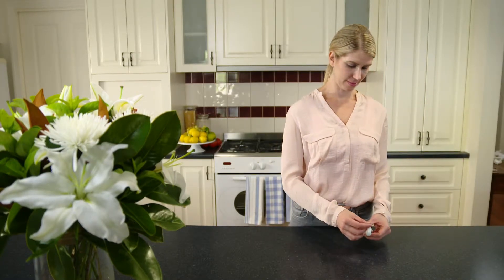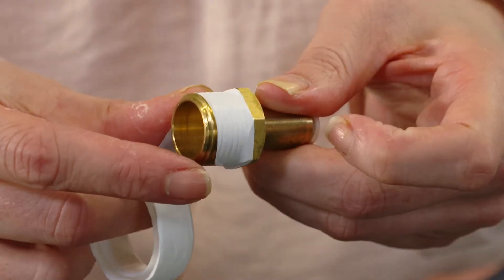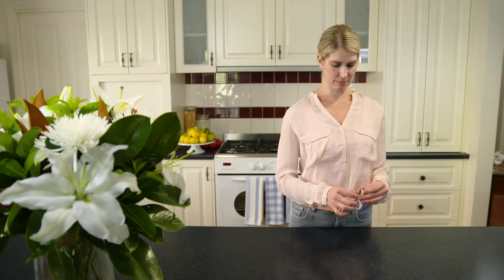Teflon tape is provided to make the threaded connections watertight. To apply the Teflon tape, wrap it around the thread in a clockwise direction.